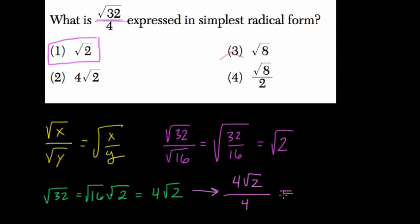And here we're dividing four groups of radical 2 divided four ways. So those 4s cancel out to 1, which doesn't matter in multiplication. 1 times radical 2 is still just radical 2, the answer we got before. So the answer is choice 1. Thanks.